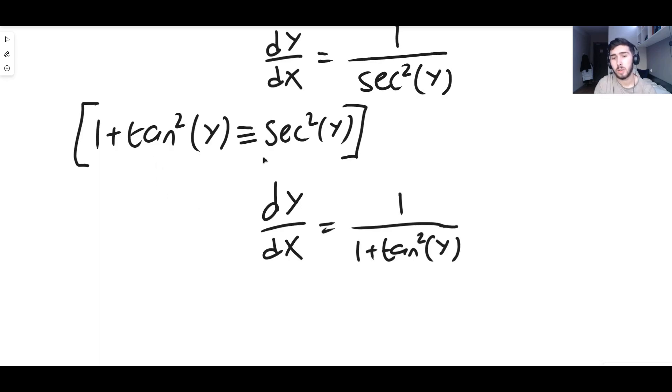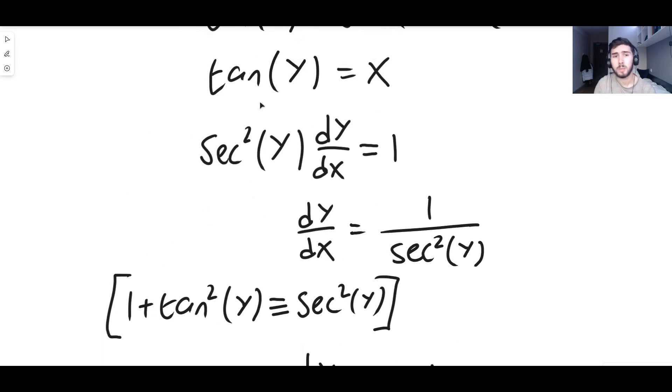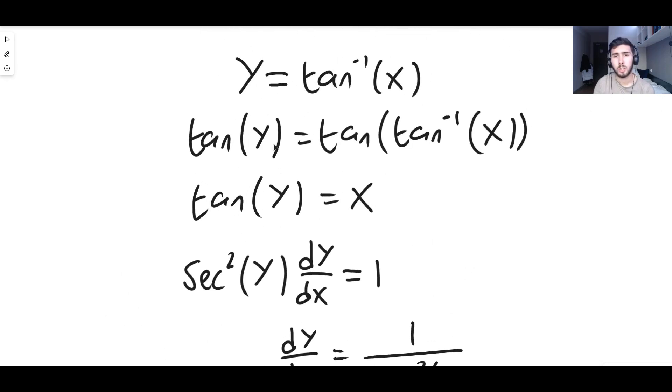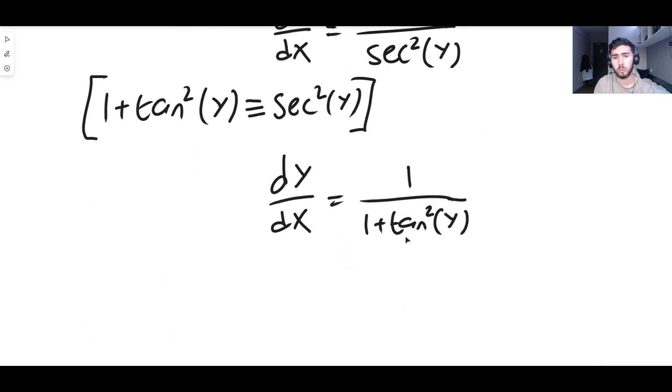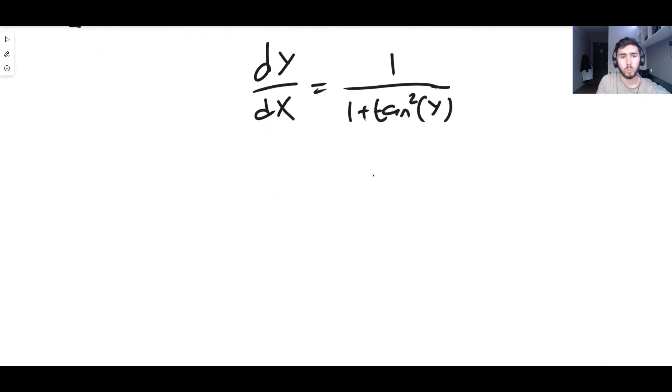And this is very nice because we know what y is. We've already defined it to be arctan of x, inverse tan of x, and that's the definition of what y is. So what we can say now is that dy/dx is simply one over one plus tan² of inverse tan of x, like this.